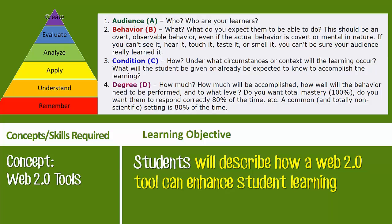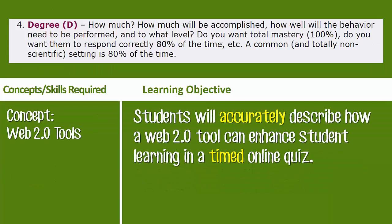That's just A and B. C is the condition — the environment or circumstances in which students perform this action. I want to put it as a long-answer question in a timed online quiz, so I know they're writing it themselves fairly quickly. For degree, I already have 'timed' implied in the condition, and I'll also add 'accurately' — no errors in their understanding of what the Web 2.0 tool can or can't do. So I have a combination of accurately and timed to show my degree.